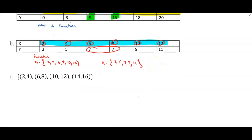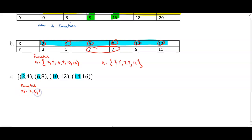The last one is a relation. Looking at the x-values, do any of them repeat? No, therefore this is a function. The domain is 2, 6, 10, 14. The range — the y-values — is 4, 8, 12, and 16.